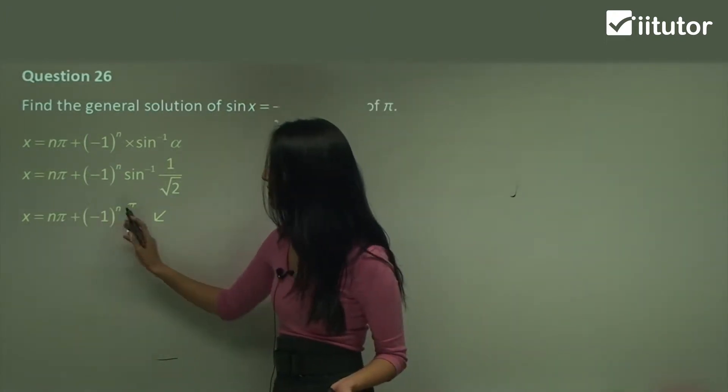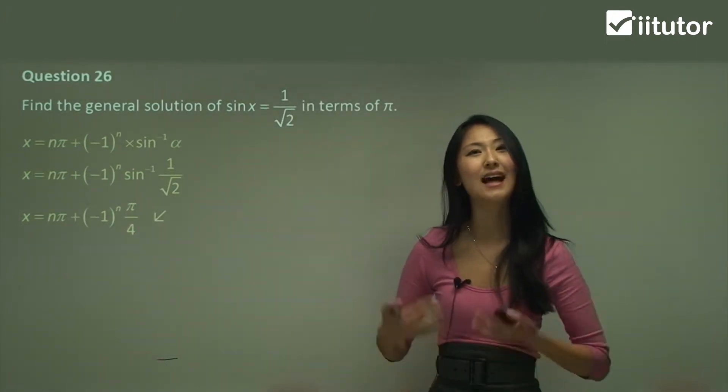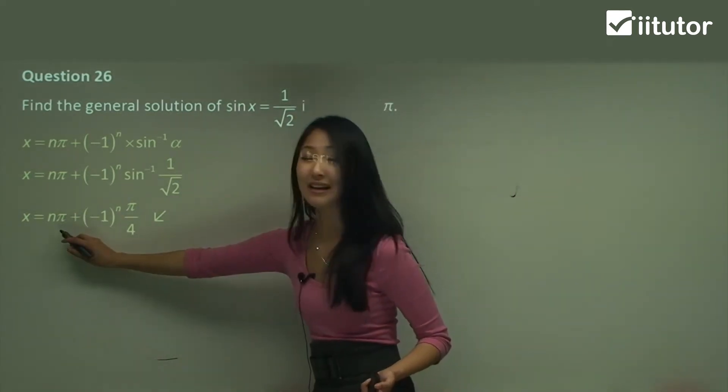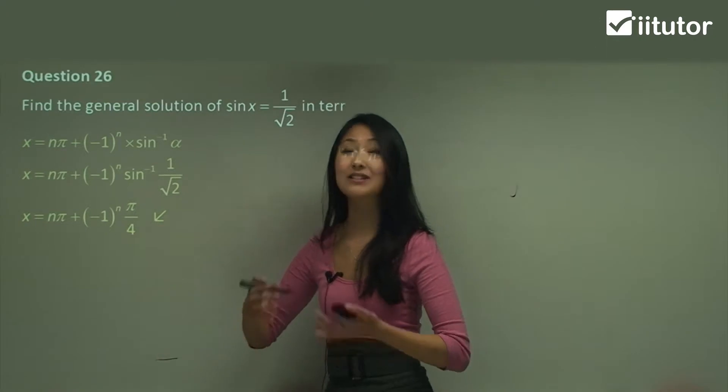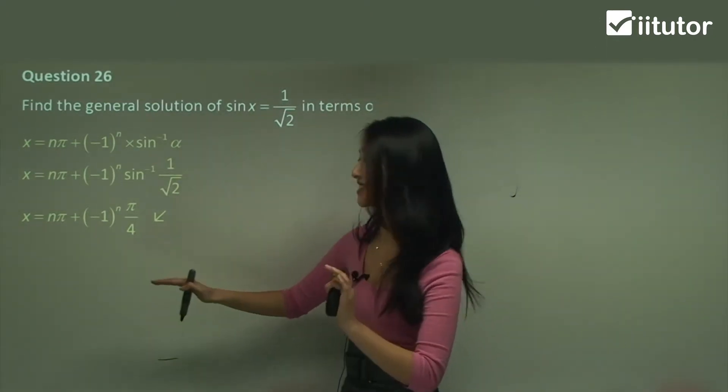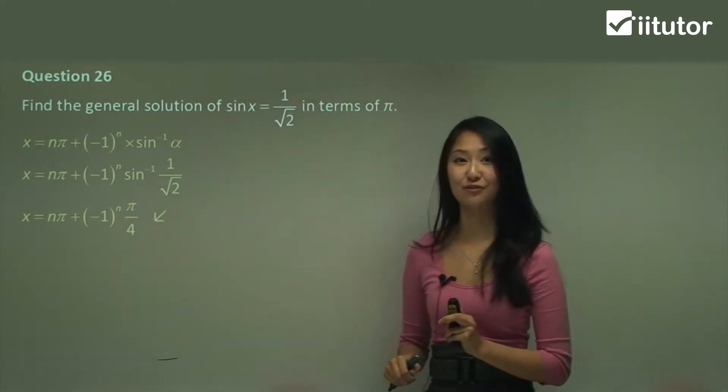So your n is going to stay n because that is what makes it general, that whatever number you substitute in there, any integer is going to satisfy this equation. Okay so remember we're not working out what n equals to. That stays there for the general formula.